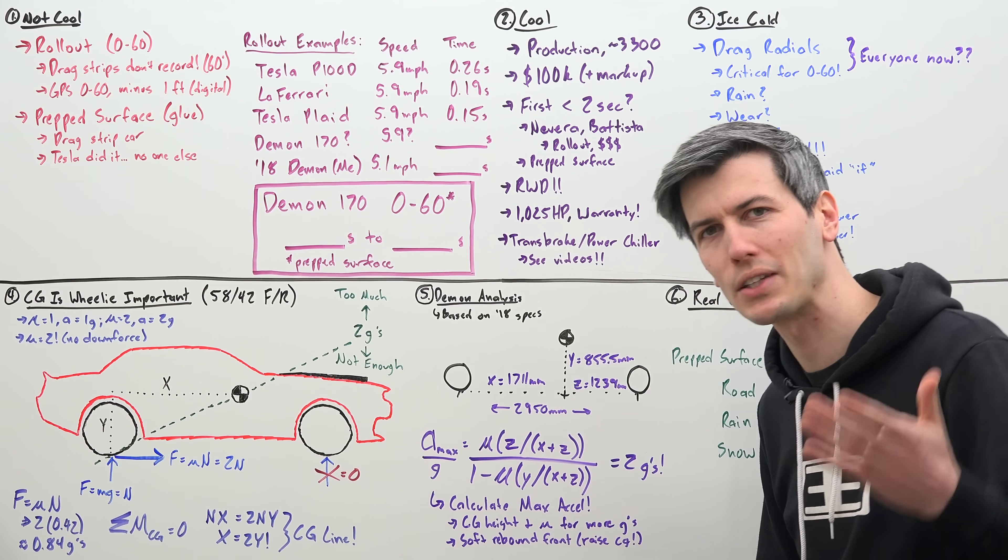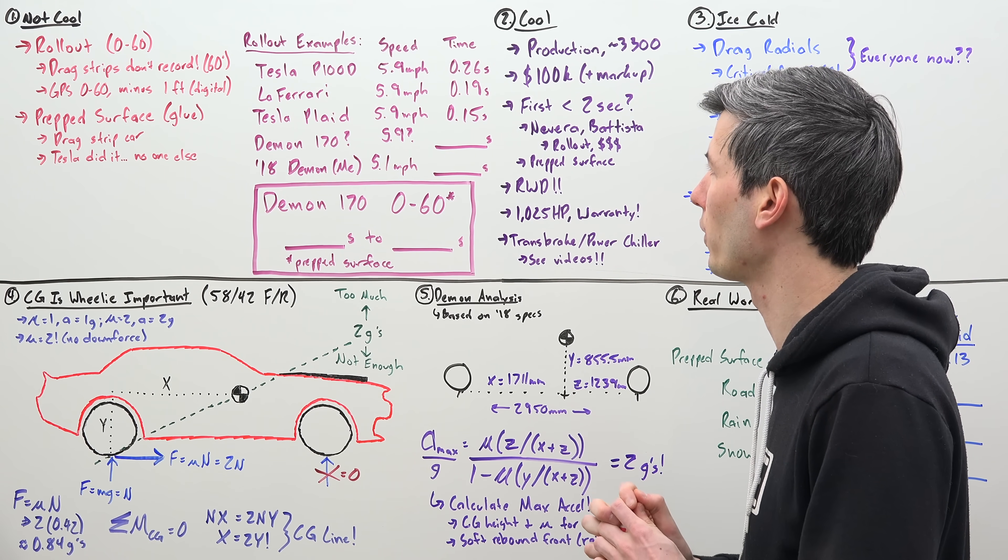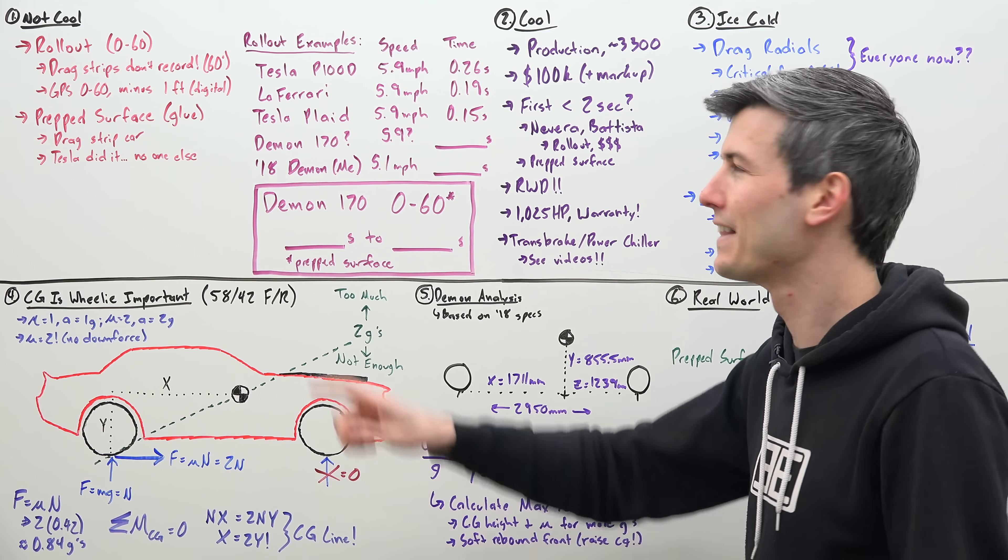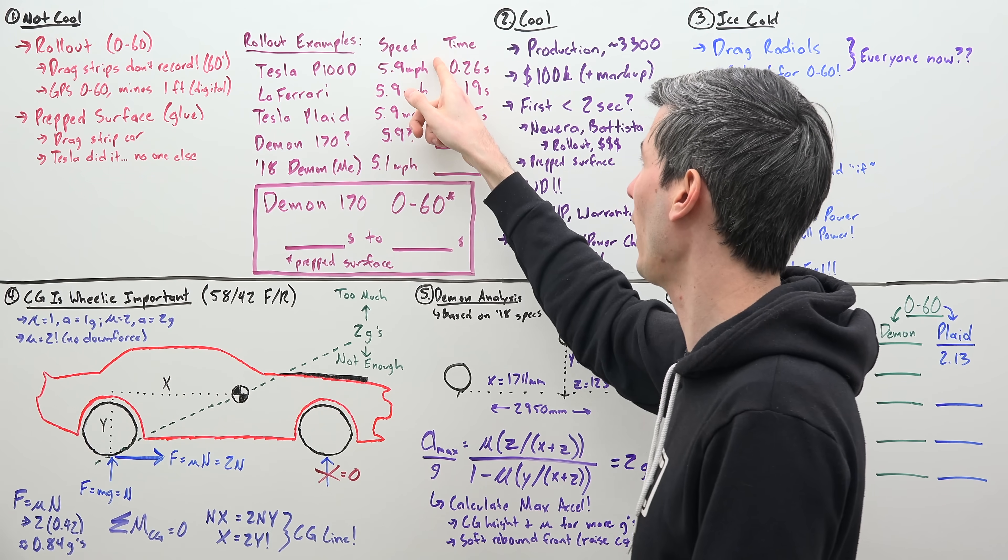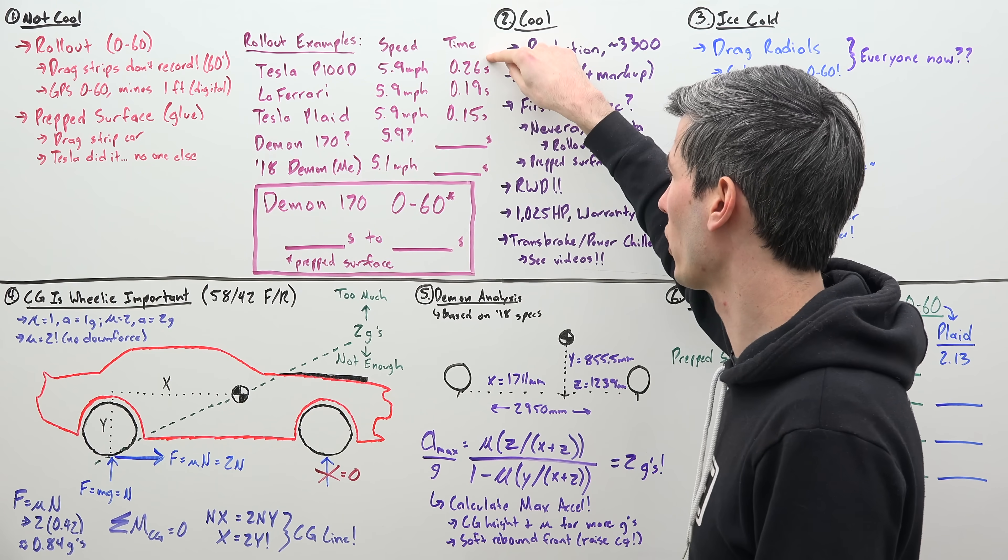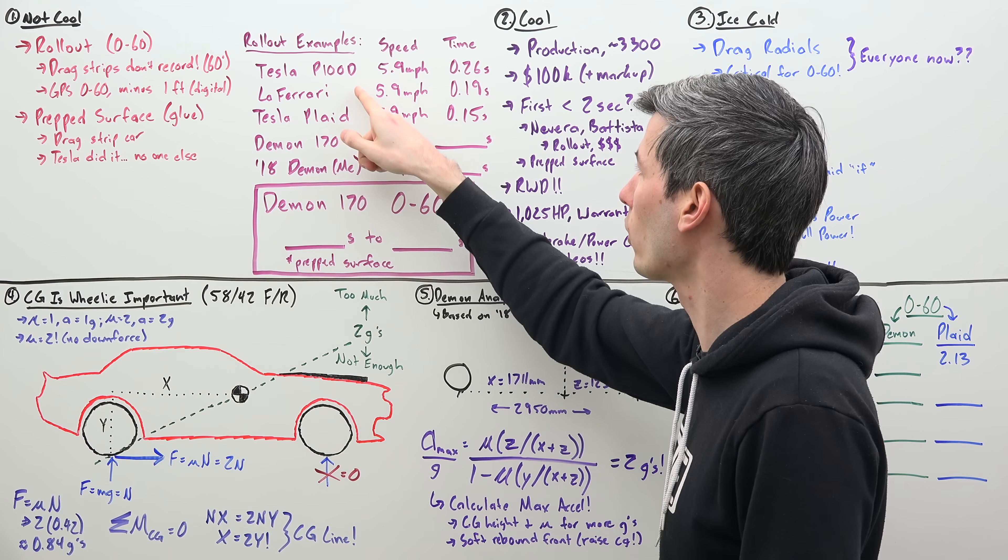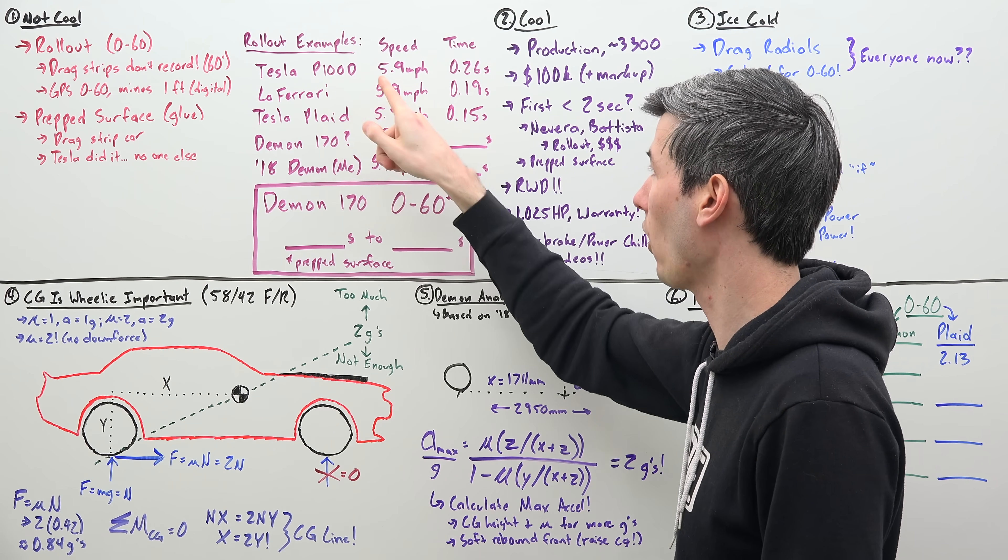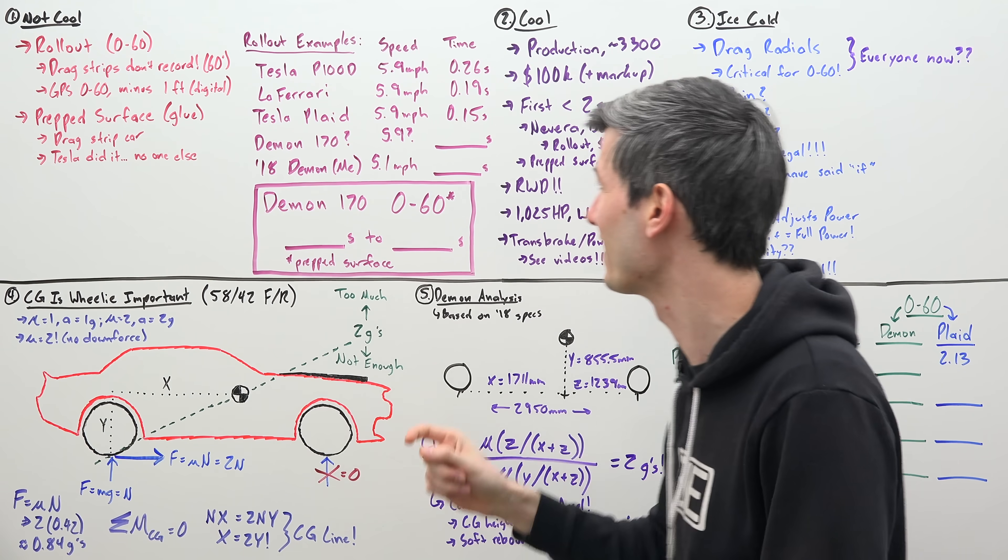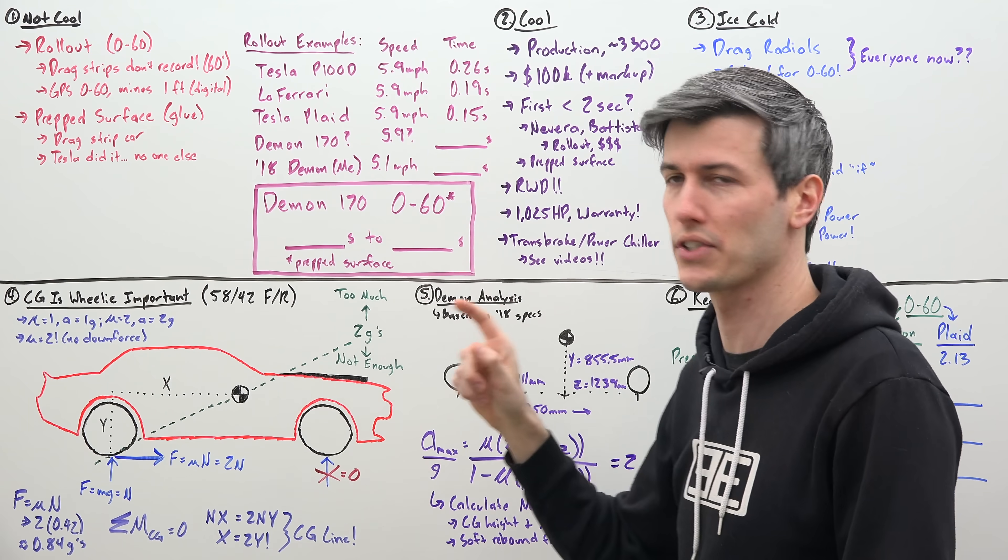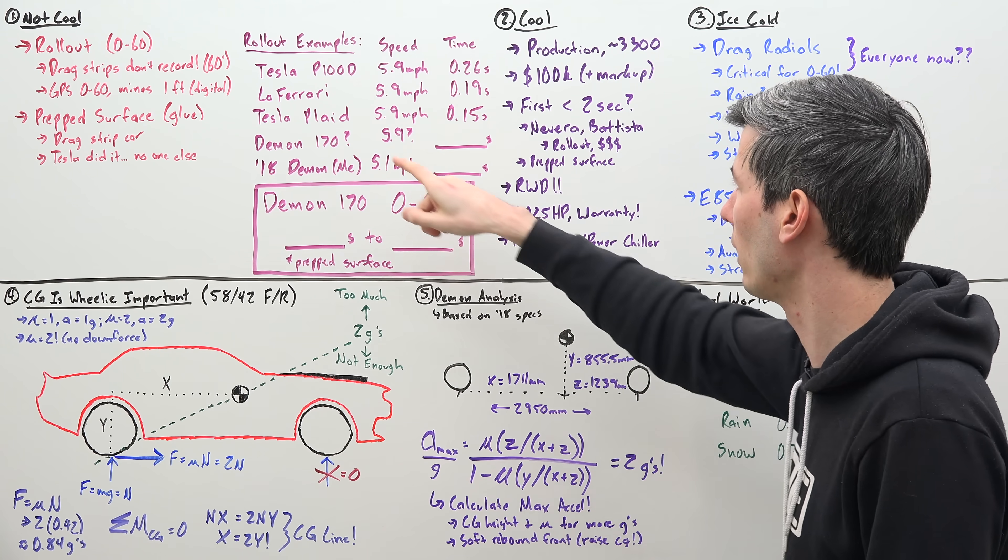So regarding real numbers, let's look at how powerful rollout really is looking at some actual examples. So these are some numbers from Motor Trend. The Tesla P100D was able to accelerate to 5.9 miles per hour in that one foot of rollout, and it took 0.26 seconds. LaFerrari rear wheel drive, so kind of similar to the case here, also 5.9 miles per hour, and it did it in just 0.19 seconds.